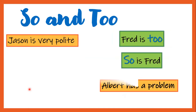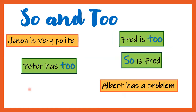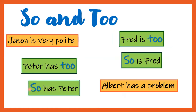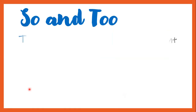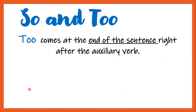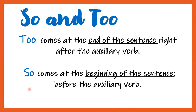And the last one: 'Albert has a problem — Peter has too / So has Peter.' So to summarize: so and too are used for positive sentences. Too comes at the end of the sentence right after the auxiliary verb, and so comes at the beginning of the sentence before the auxiliary verb.